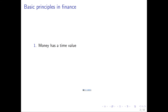The second reason money has a time value is risk. Money today is certain — if I give you $100 right now, it's guaranteed. But if I tell you I'll give you $100 in a year, there's a chance you might not get it. So there's risk involved. Therefore, the very first important principle is that money today is worth more than money tomorrow.